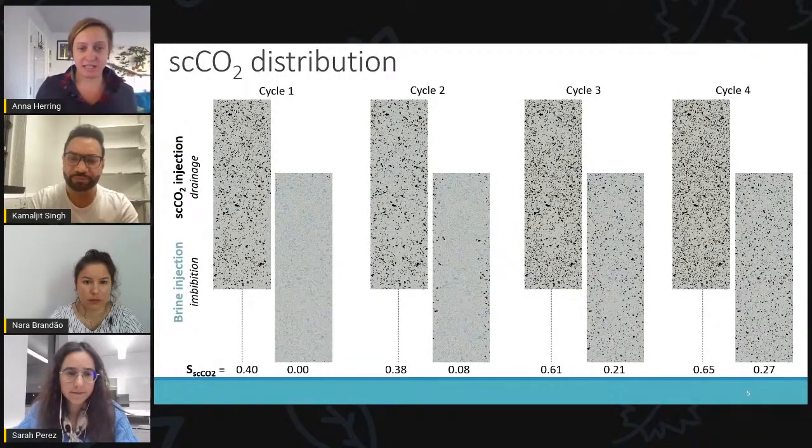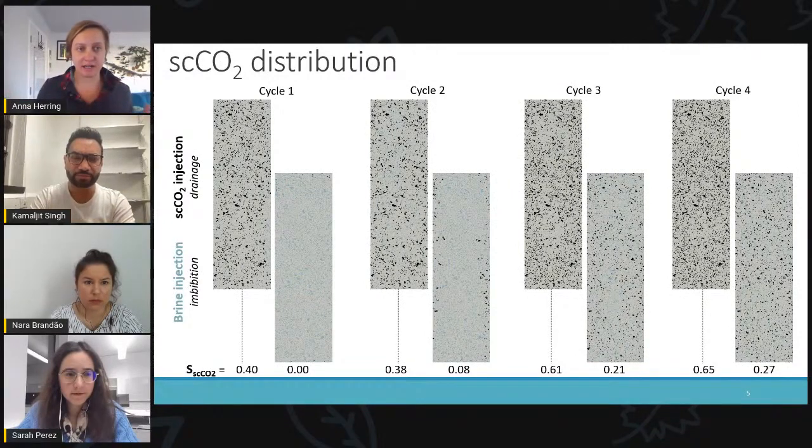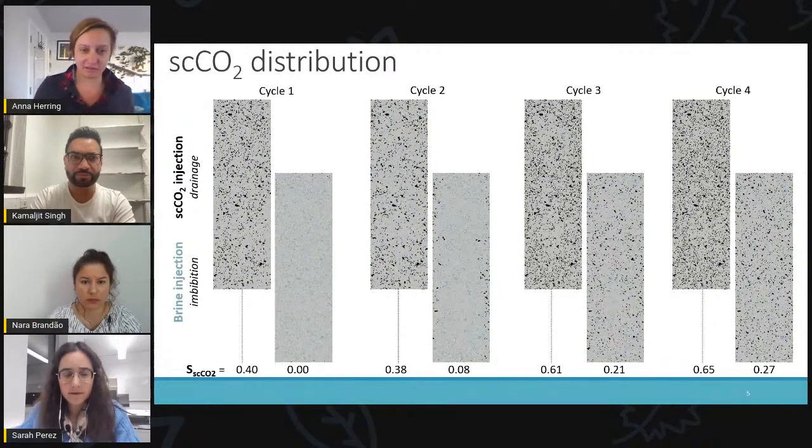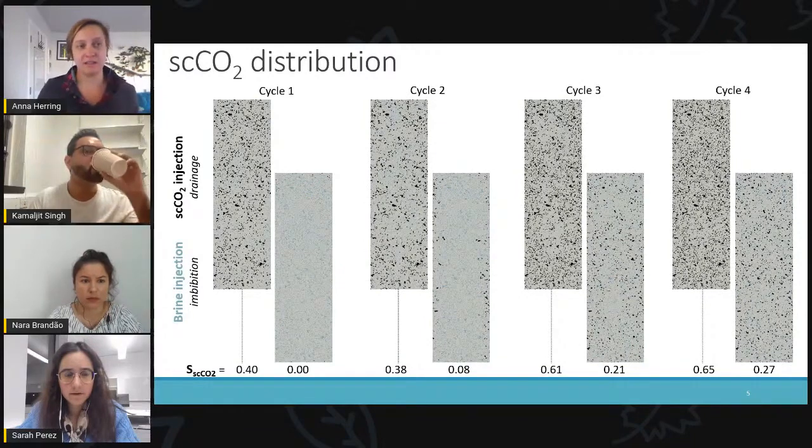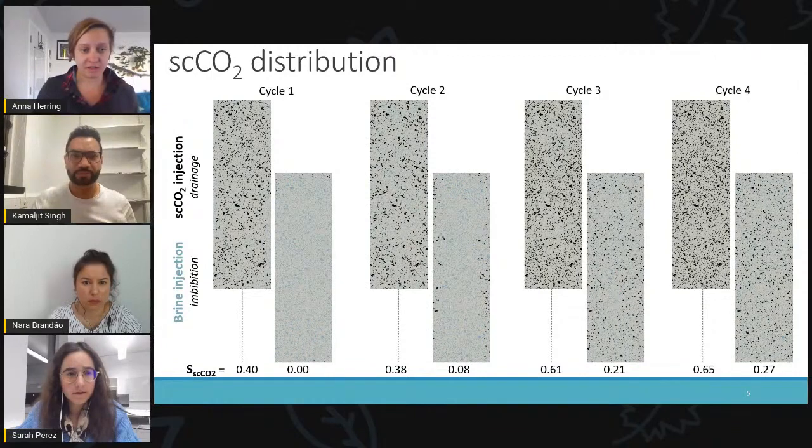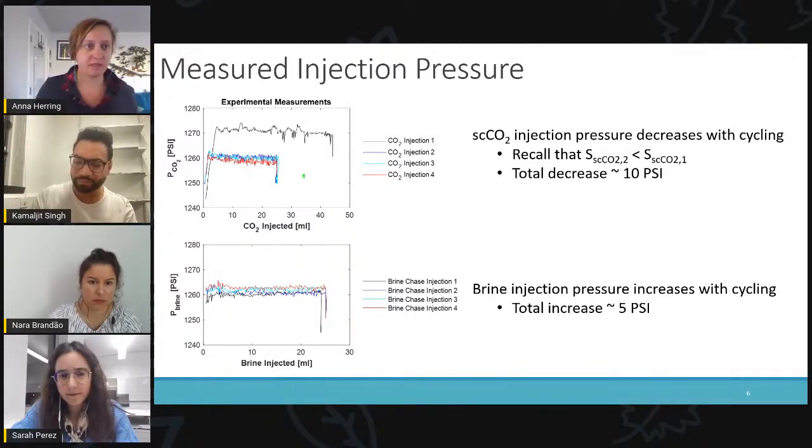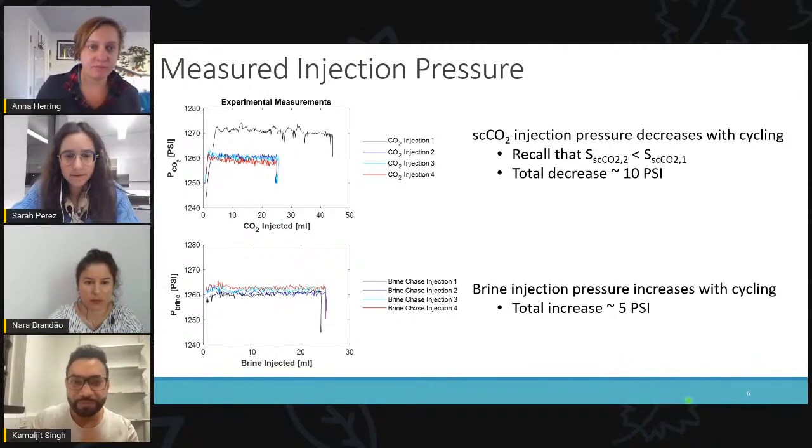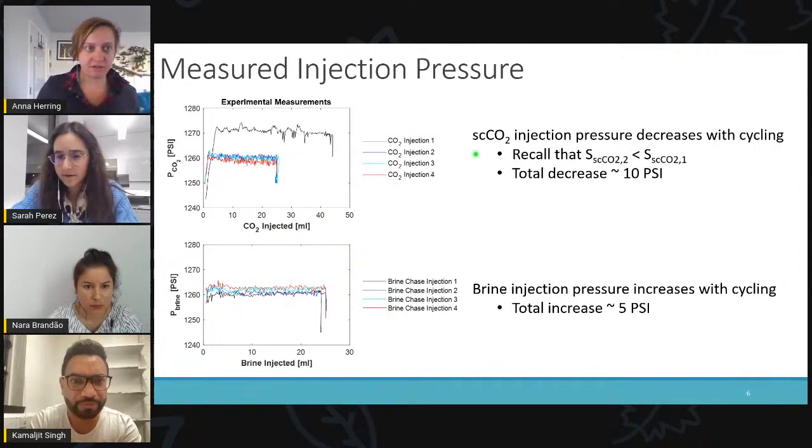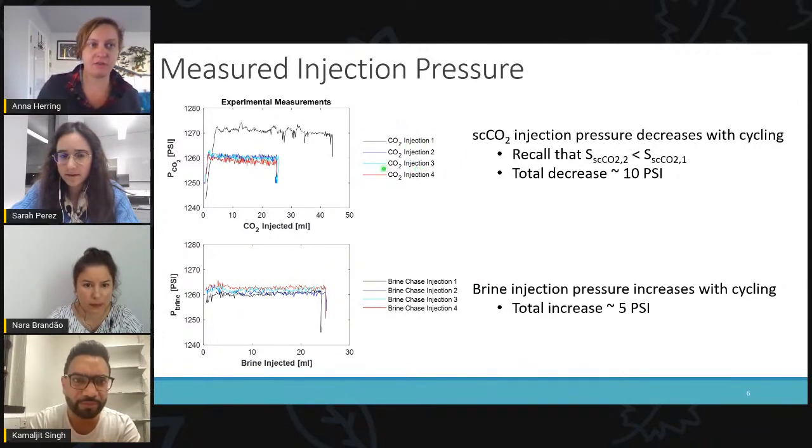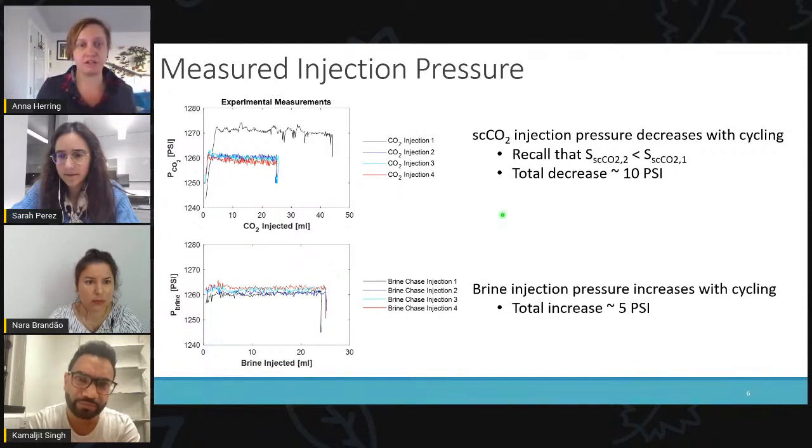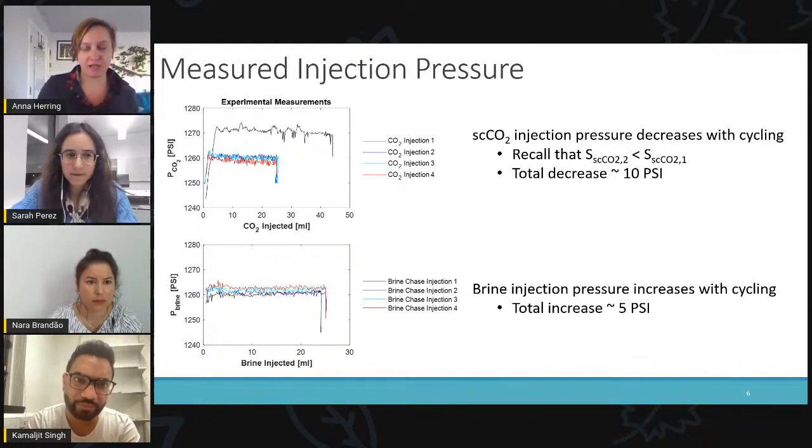Okay, so clearly in this experiment, we are seeing that there is some change in CO2 distribution and trapping as we go through these four cycles. You might have guessed from the title of the talk that we suspect that these changes are due to a shift in wettability of the rock as we're going through these cycles. So now I want to show you some other features of the experiment that support this idea of a change in wettability. So here are the measured pressure profiles for each injection. This is the absolute pressure measured at the injection pump. I have the CO2 injections at the top and the brine injections at the bottom. And what we see here is that the supercritical CO2 injection pressure decreased for each successive CO2 injection, while the brine pressure just slightly increases. So these measurements are also consistent with the system that's becoming slightly less water wet.